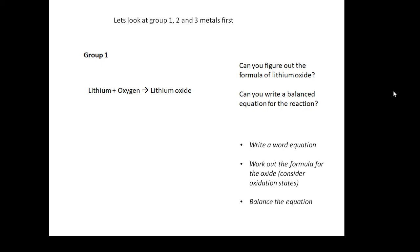Write a word equation first, we've done that. Work out the formula for the oxide and you can do that by figuring out the oxidation states and then balance the equation. Now the oxidation states, lithium is group one so its ion will be Li+. Oxygen is group six so it will be O2-. So we're going to need two lithiums for every oxygen.